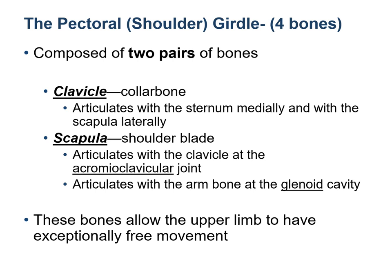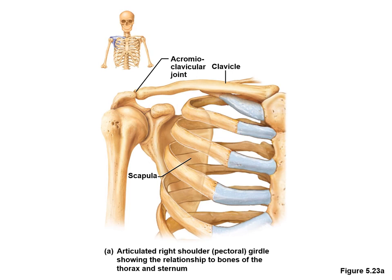The pectoral or shoulder girdle is made up of four bones, or two pairs of bones. The first pair is the collar bones and the second pair is the shoulder blades or the scapula. The clavicle articulates medially with the sternum and laterally with the scapula, while the scapula articulates with the clavicle at the acromioclavicular joint and with the head of the humerus at the glenoid cavity. The figure shows the articulated right pectoral girdle.